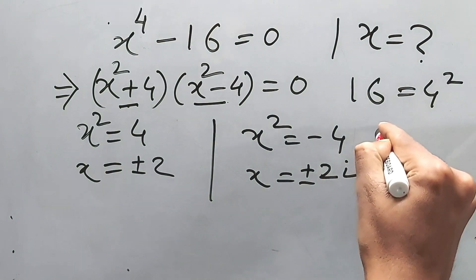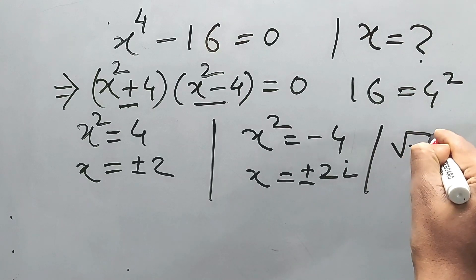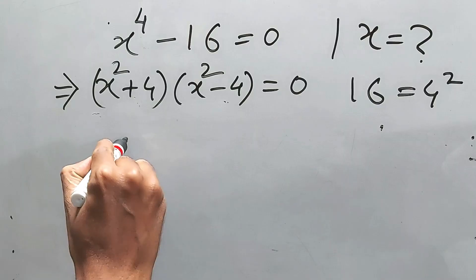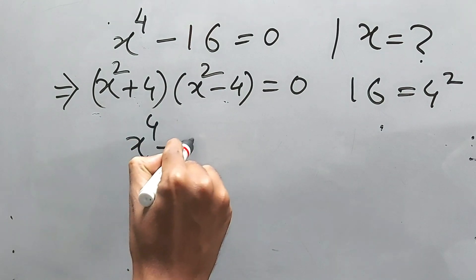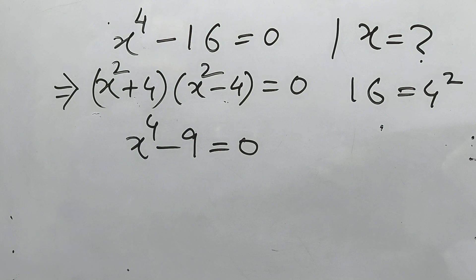2i, because square root of minus 1 is equal to i. And it's bonus time! x to the power 4 minus 9 is equal to zero. Again, we know this, right?